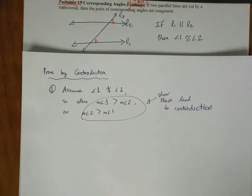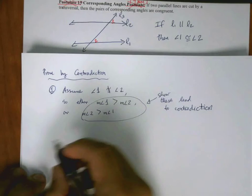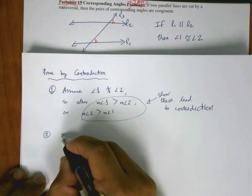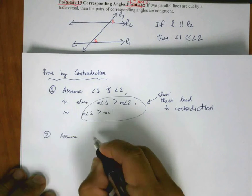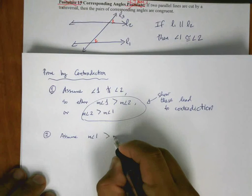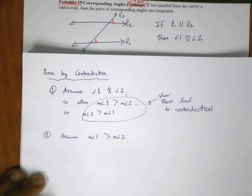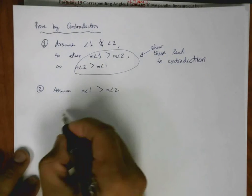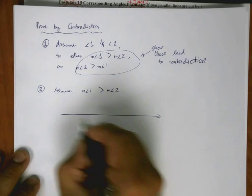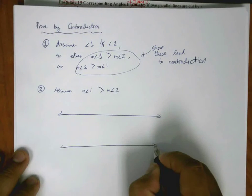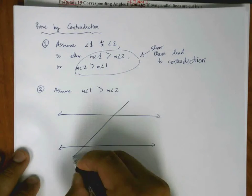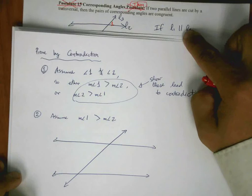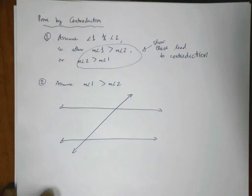Let's start with the first case. Both of these lines are fairly easy to show. Assume the measure of angle 1 is bigger than the measure of angle 2. Let me redraw this picture to show you what this looks like. One of the things we know from our given statements is that line 1 and line 2 are parallel, so I can make that update in my picture here.